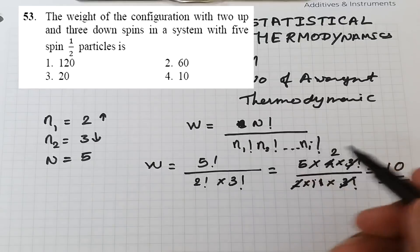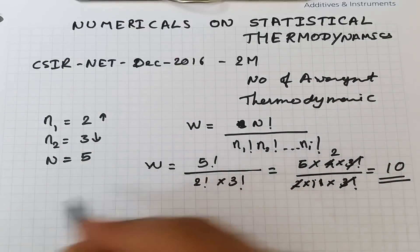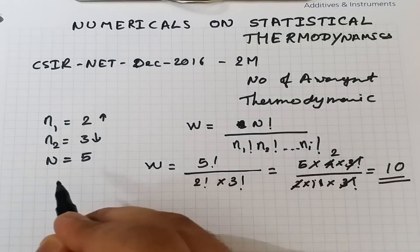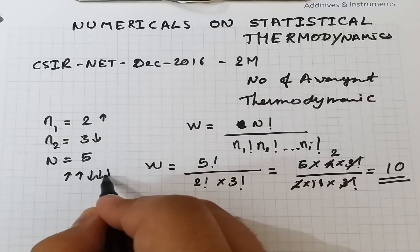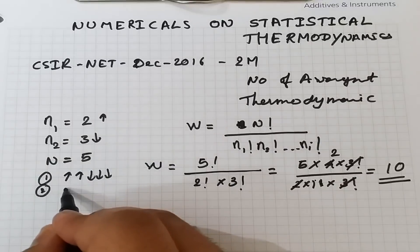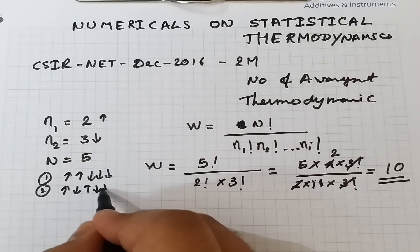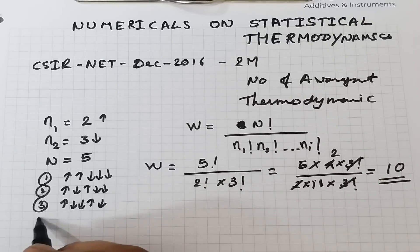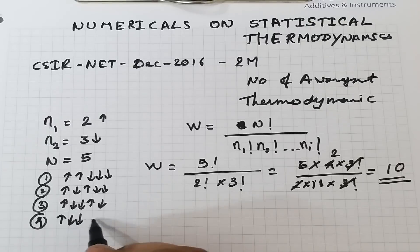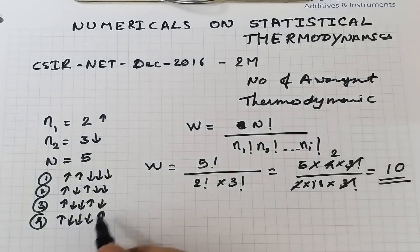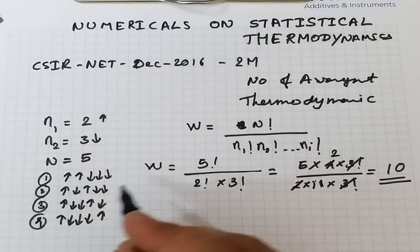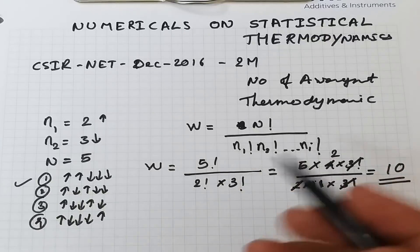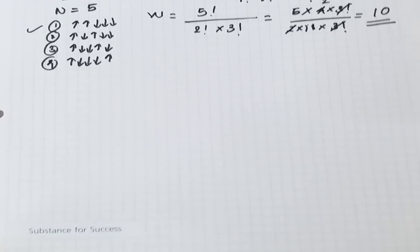This was asked for two marks in December 2016. The problem can also be solved by physically arranging the spins — listing all arrangements of two up and three down spins — but that takes more time. If you know the thermodynamic probability formula, you can get the answer easily.